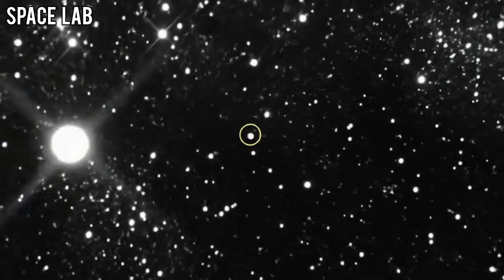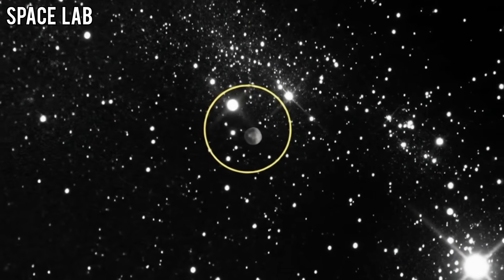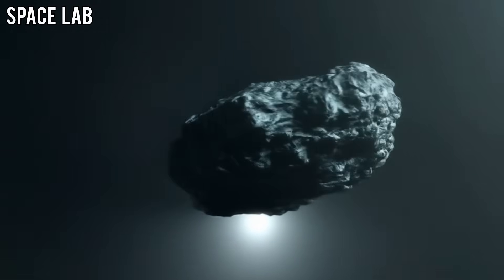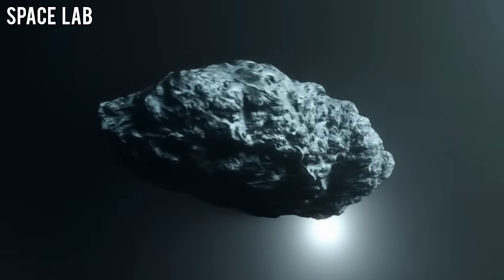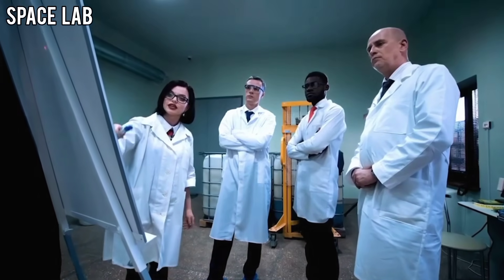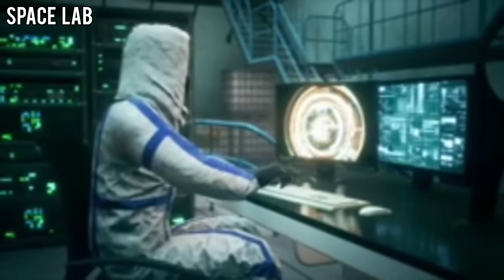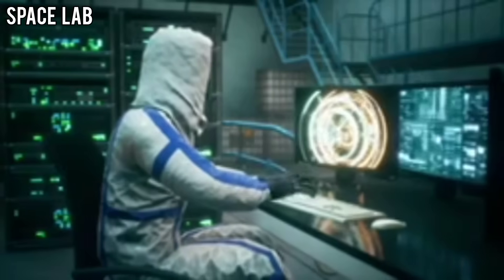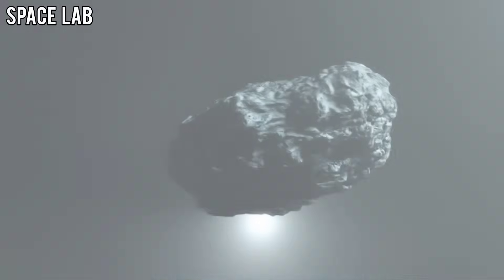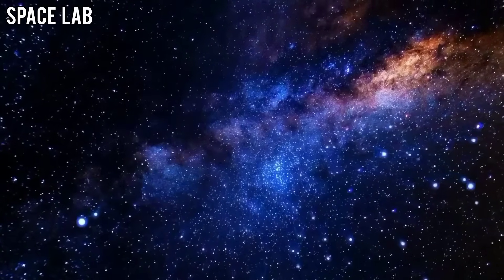Even stranger, the object being tracked, 31-slash-ATLAS, seemed to glow in ways no asteroid should. Instead of reflecting sunlight passively, it flickered like a beacon or a transmission source. Engineers checked for glitches, lens flares, and cosmic interference. Nothing explained the patterns. The image was flagged as unusual, and before the system went offline, it was forwarded to several scientific teams.